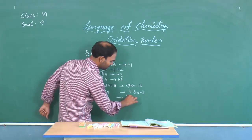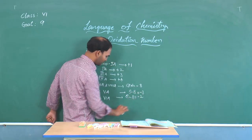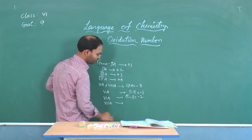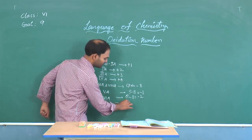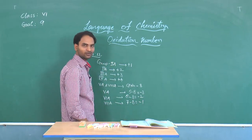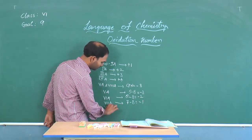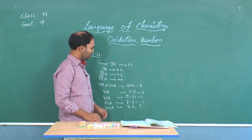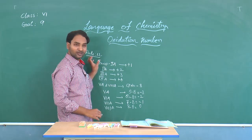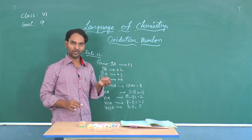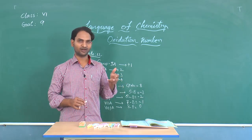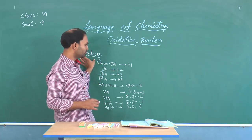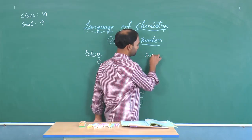For group 6A: 6 minus 8 gives minus 2. For group 7A: 7 minus 8 gives minus 1. For group 8A: 8 minus 8 gives 0. So from the group number you can determine the oxidation states for elements belonging to that group. This completes rule 12.